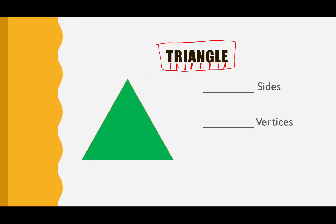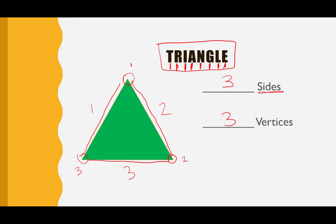Let's count the sides and the vertices of our triangle. You have one side, two, three sides. So we're going to write the number three next to where it says sides. We're going to count our vertices now, our corners. We have one and two meet — that's going to be our first corner, our first vertice: one, two, and three. So our triangle has three sides and three vertices.